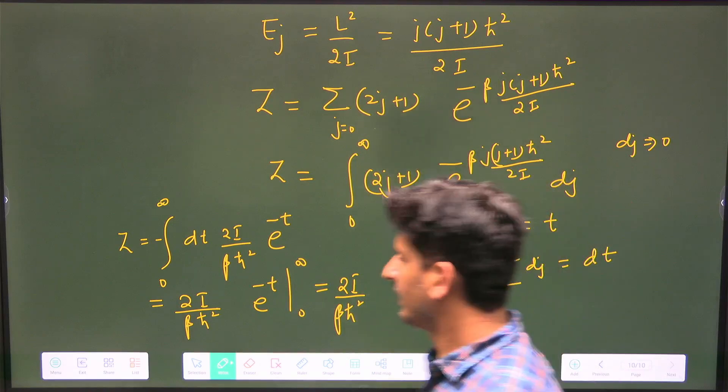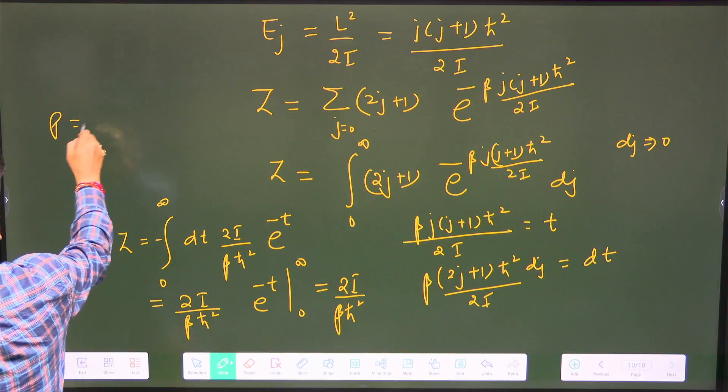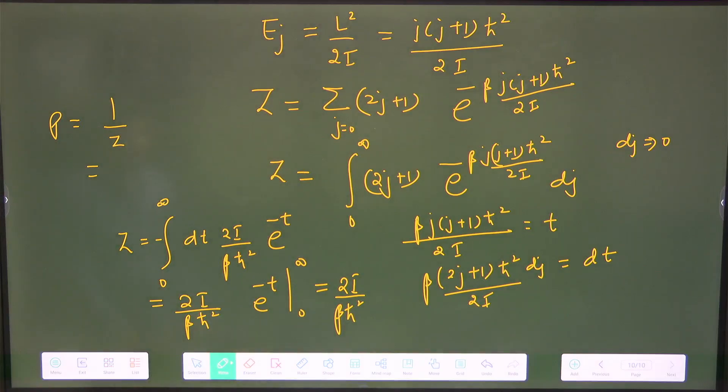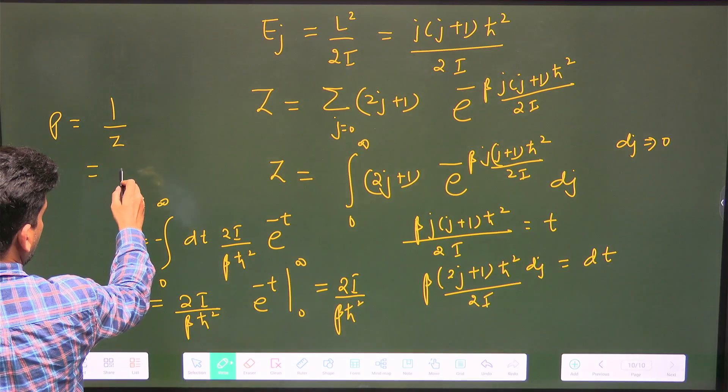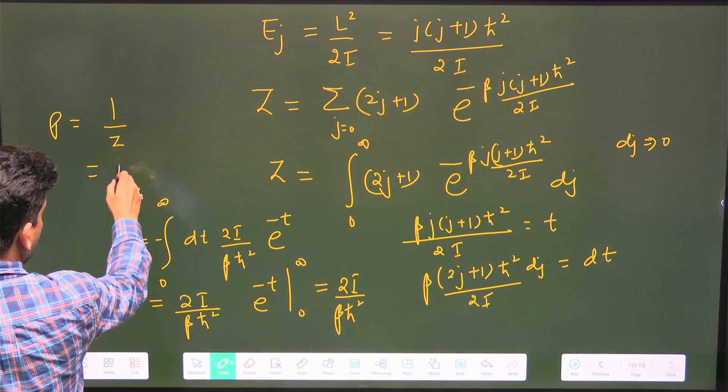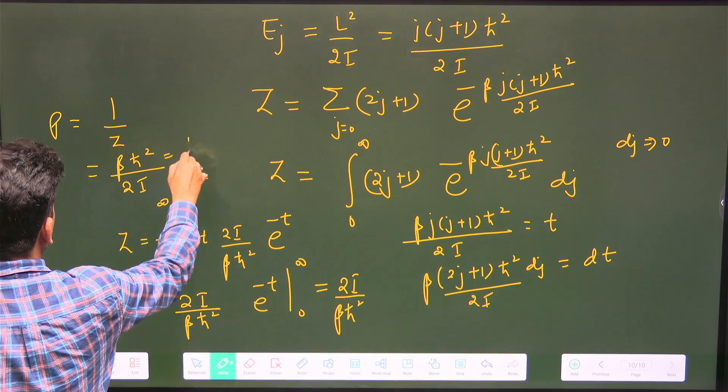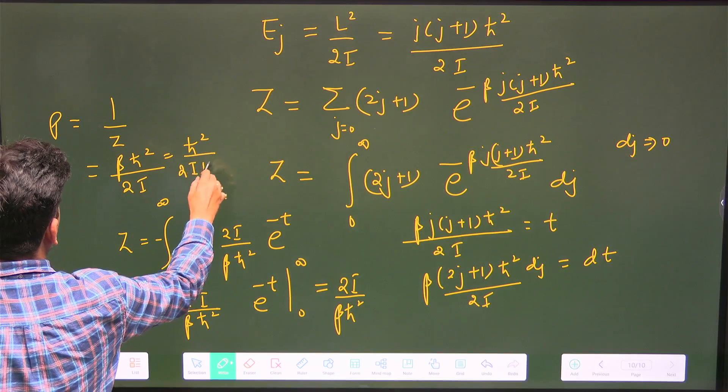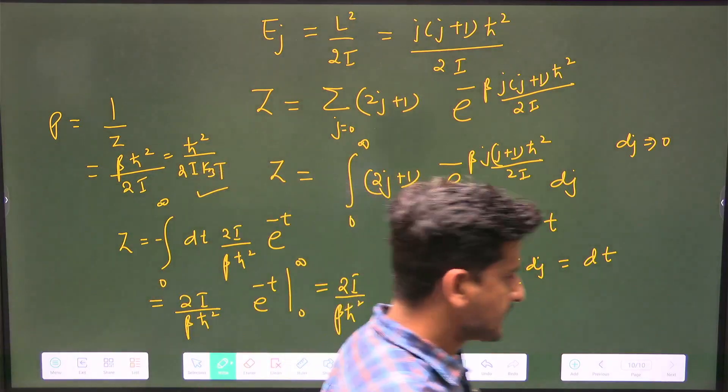The probability to be in the ground state is 1/Z, because the partition function contribution is 1 when j=0. This becomes βℏ²/(2I), which equals ℏ²/(2I·kB·T). This is the correct option, but